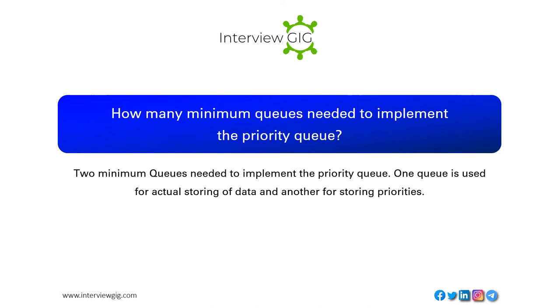How many minimum queues are needed to implement a priority queue? Two minimum queues are needed: one queue is used for actual storing of data and another for storing priorities.